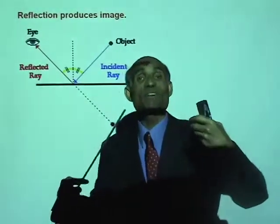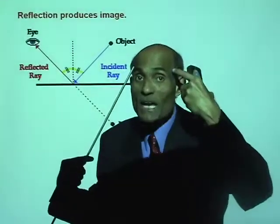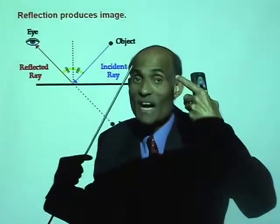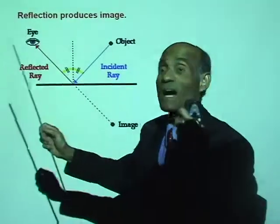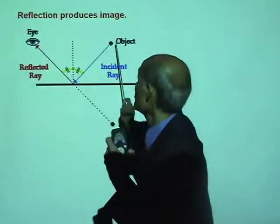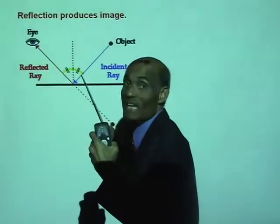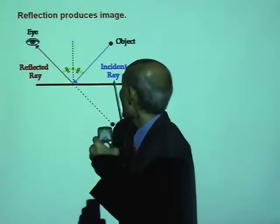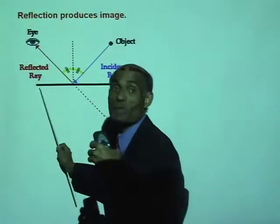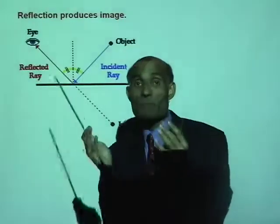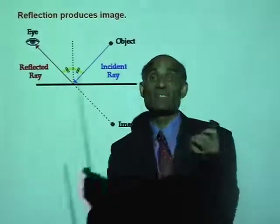Illusion created by your brain thinking that light only travels in a straight line. But you notice that this ray actually underwent a change in direction because of the mirror. The mirror changed the direction of the light.